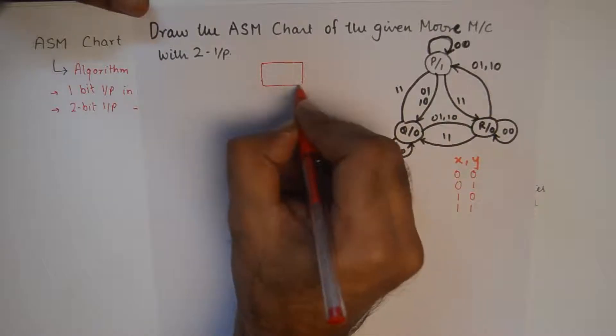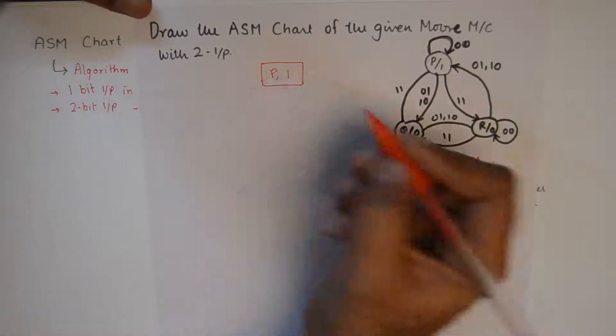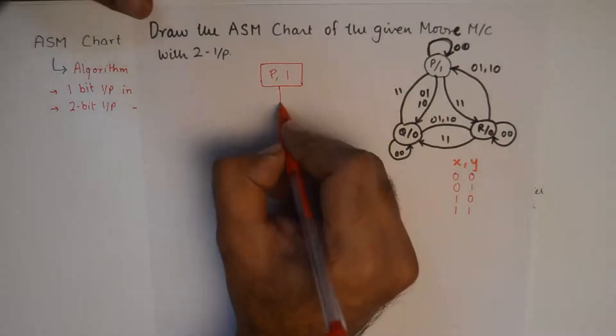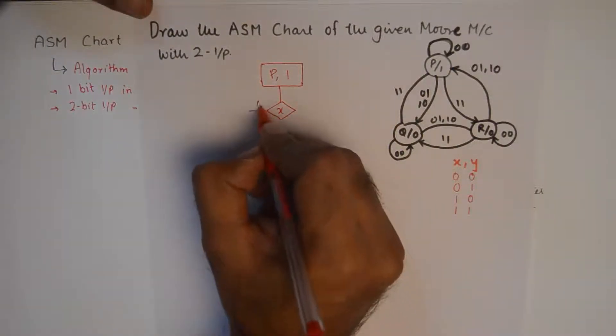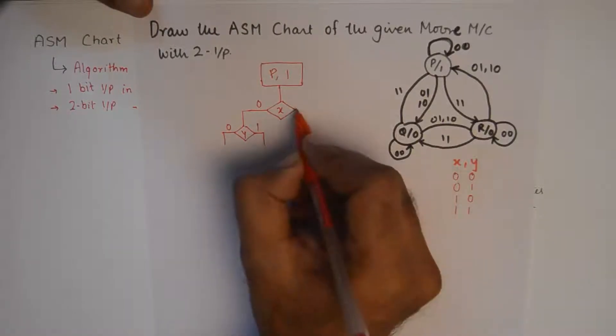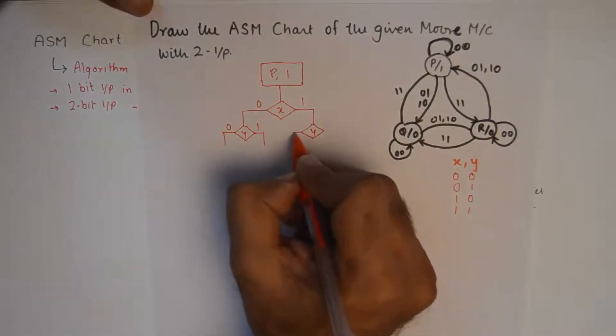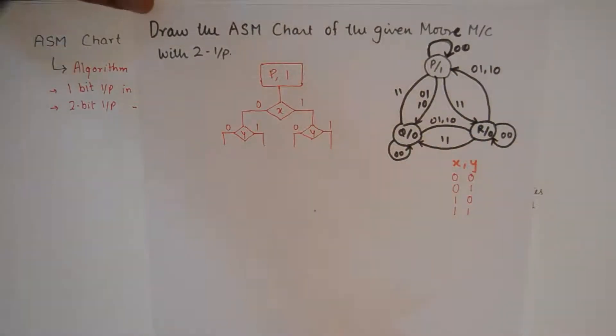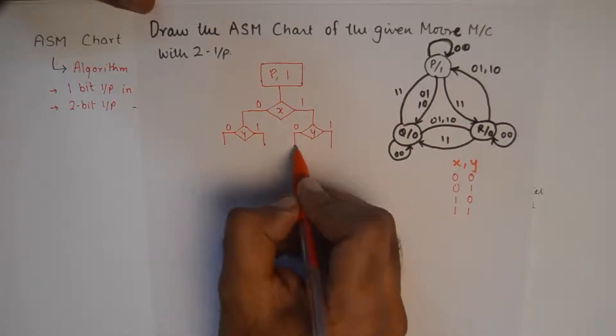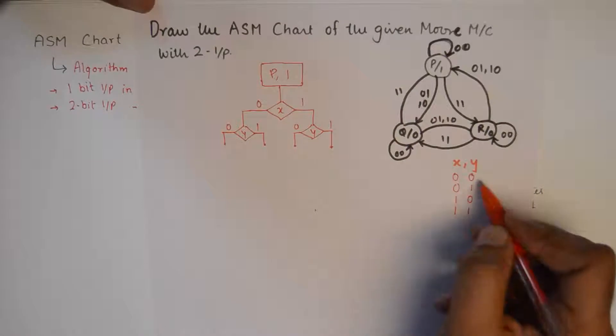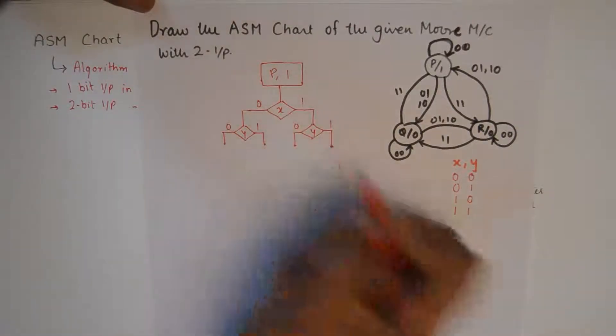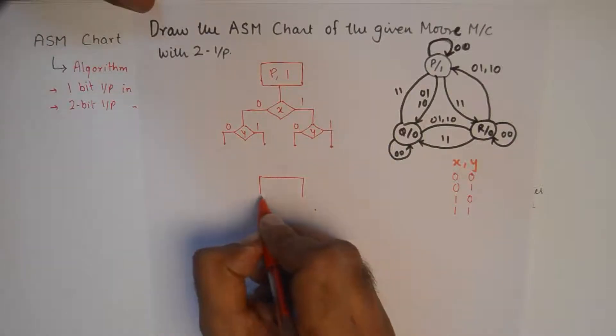Taking this logic into account we start off with the first state P which has a fixed output 1, which is drawn in the state box. When we get a possibility of x as 0, we again have the possibility of y as 0 or a 1. Using the three decision boxes we get four basically nodes which have all the possible four combinations of input. So this is 00, this is 01, this is 10, and this is 11.